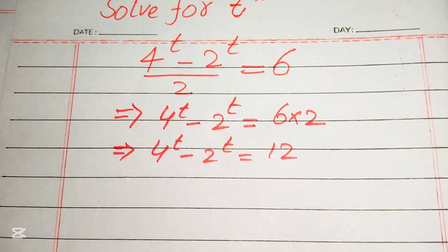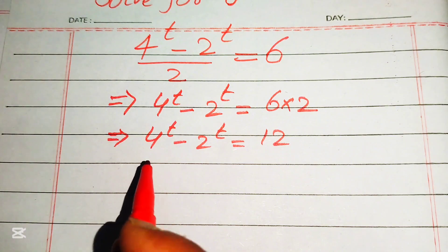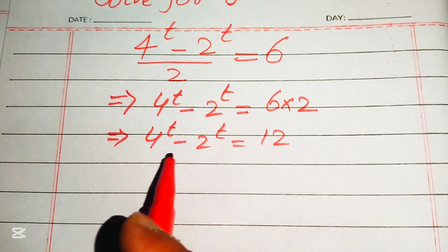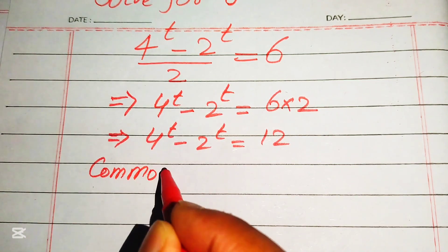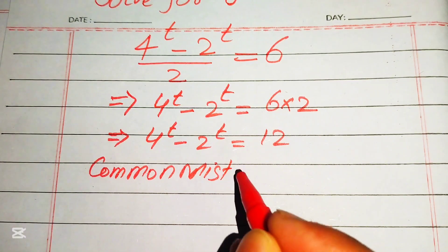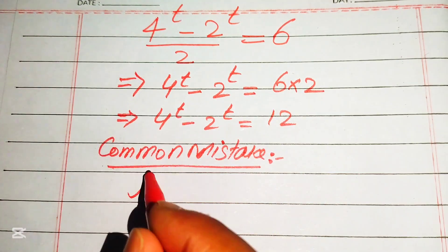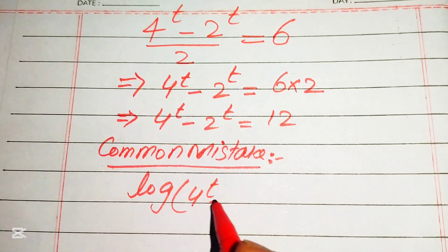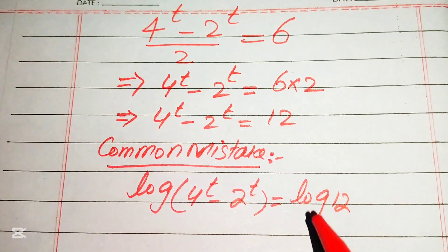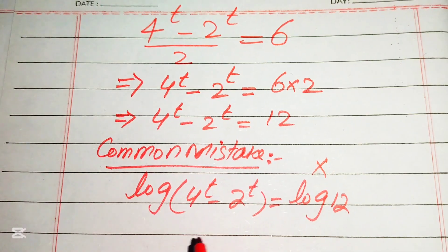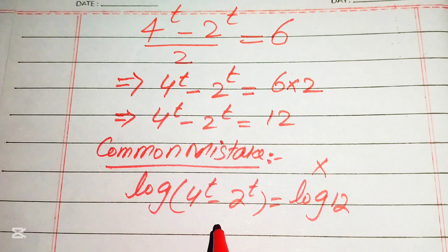Now I want to discuss some common mistakes. Some students apply the logarithm directly to this equation — that is the common mistake I want to highlight here. Some students take the log on both sides in this way, but this is the wrong method. It is a very difficult and incorrect way to solve this problem.